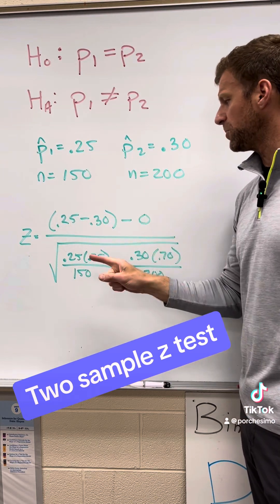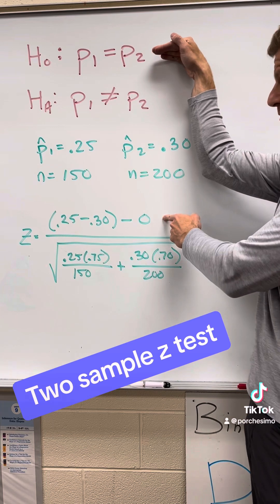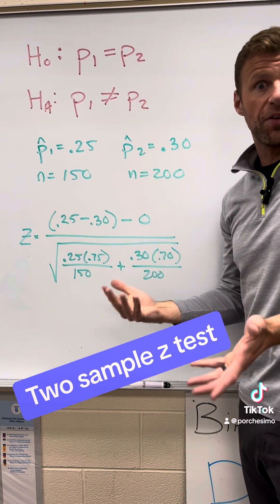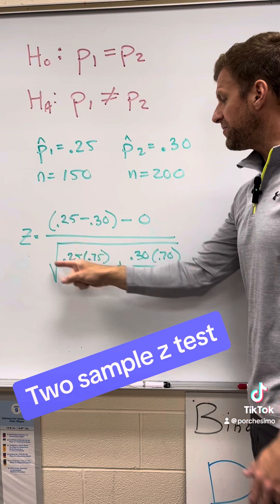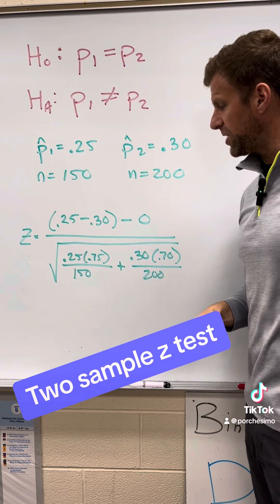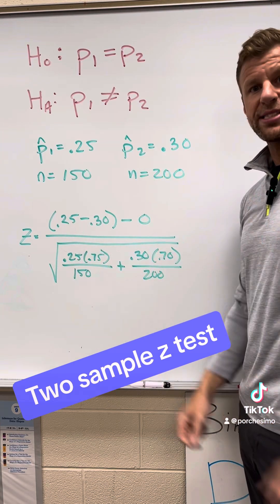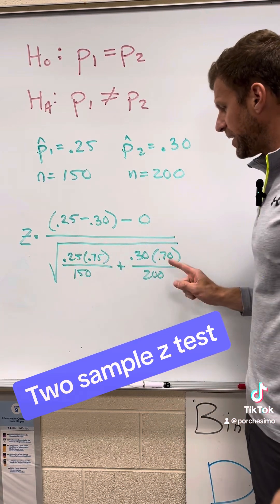This is our observed sample statistic, the difference between our two samples, minus, well, if there's no difference, well, that would be a parameter of zero. There's no difference, divided by our standard error formula. So the standard error formula with two sample proportions from two samples is right here.